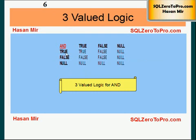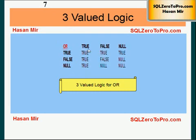Looking at the AND operator in this matrix: true AND true is true, and true AND false is false — we already know that. But if you bring null into the equation, true AND null is neither false nor true — it's simply null. Similarly, false AND null is also null.